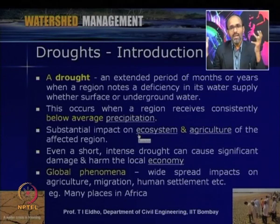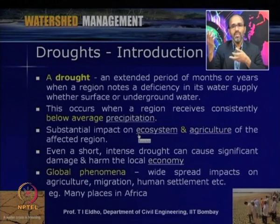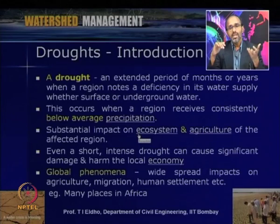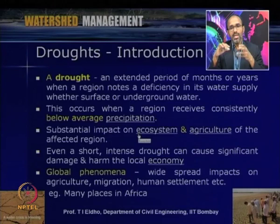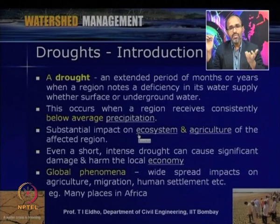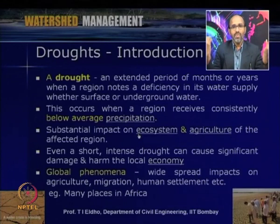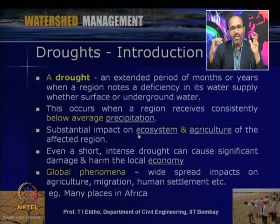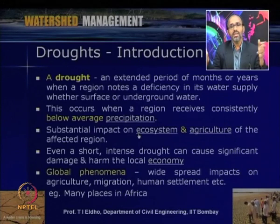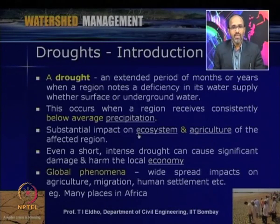The drought can be for short or long time. Short time means even though there was rainfall to a certain average condition, it was for a short duration — say 2–3 months of rainfall — but then 9 or 10 months of no rainfall or insufficient water. The total watershed will be affected in terms of economy and various other conditions. The availability of water is very important as far as watershed management is concerned.